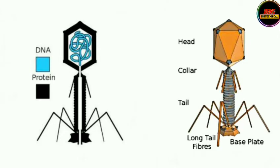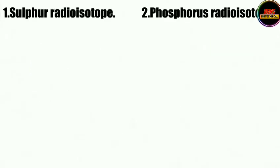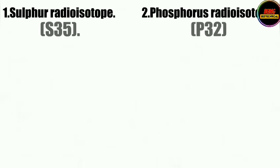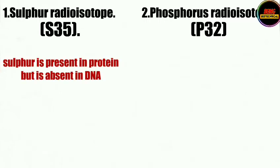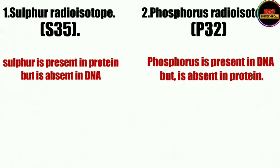The first isotope was sulfur and the other was phosphorus. The idea behind choosing these two isotopes was that sulfur is the main component making up protein but phosphorus is not present in protein. Similarly, phosphorus is present in DNA but sulfur is not present in DNA. So they chose S35 as the sulfur isotope and P32 as the phosphorus isotope.